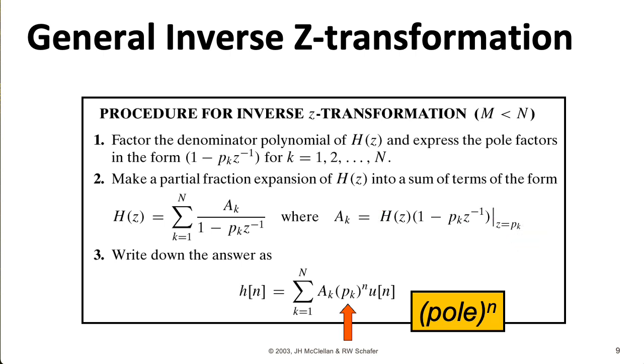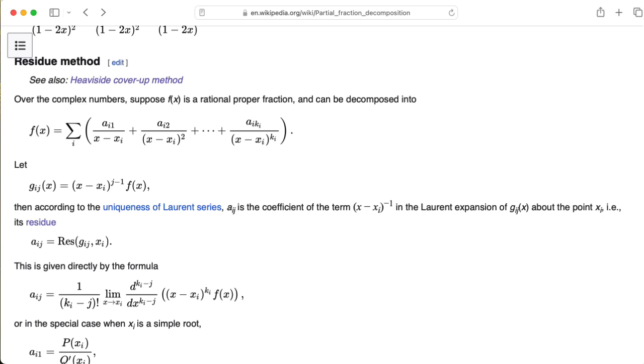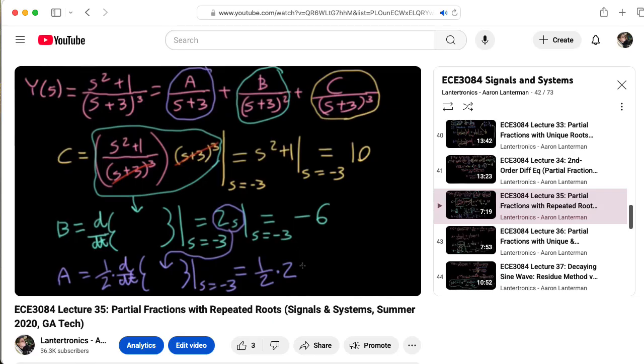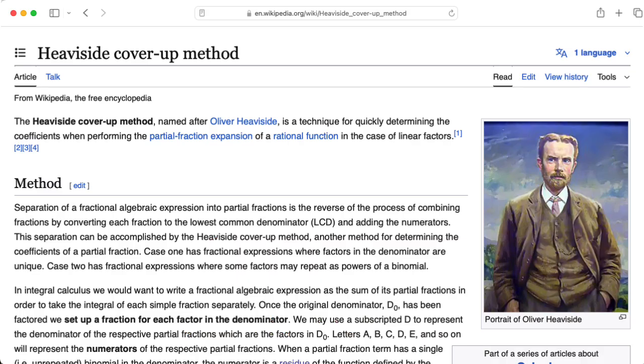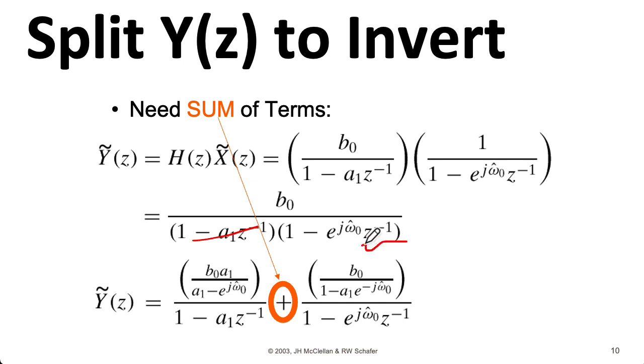Once you have those coefficients, it's easy to take the inverse transforms of the individual terms. Now, I should mention that this description here only works for single pulls. If you have double pulls or other higher order pulls, you can use the residue method on that, but it gets more complicated. But we generally don't get into that in EC 2026. I do cover that kind of material in EC 3084 in the context of inverting Laplace transforms. So let's think about taking this system function that's written in terms of these factors and multiplying it by this 1 minus a1 z to the minus 1. That winds up canceling this factor. And we could imagine covering it up with our thumb. So this is sometimes called the cover-up method. We then take what's left over and we plug in the particular pull, which is a1.